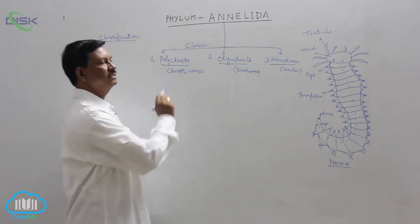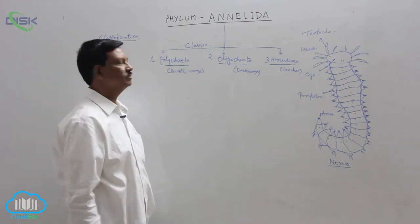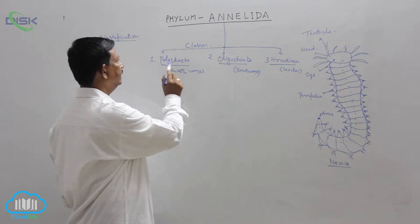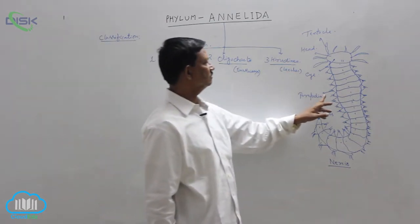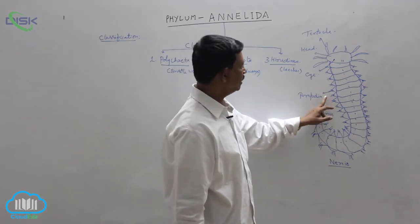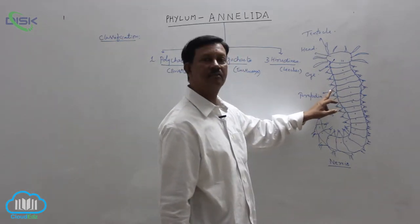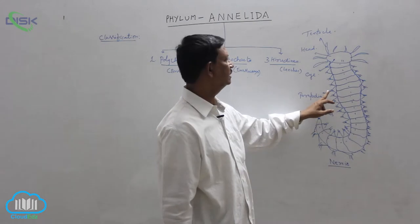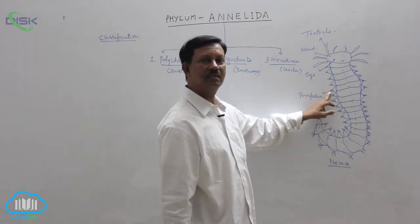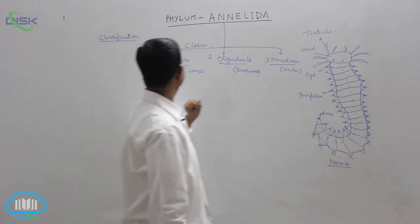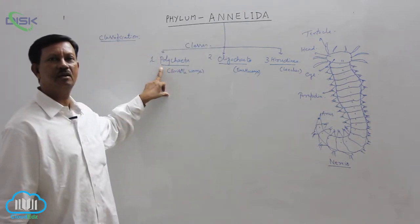First, we have to discuss the Polychaeta. Poly means many, seta means setae. Many setae are present. For example, you can take this is the parapodia. On the lateral sides of the body, parapodia is present. In each parapodia, many setae are present. Due to the presence of this character, the class name is derived as Polychaeta.